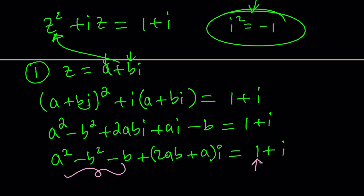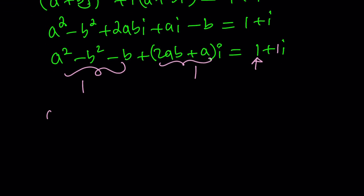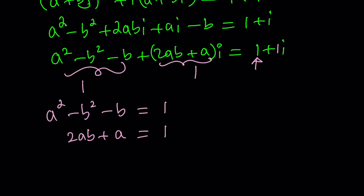We can set the real parts equal and the imaginary parts equal. So a squared minus b squared minus b equals 1, and 2ab plus a equals 1 — because that's considered 1 times i. That gives us a system of equations. You can set them equal to each other, but I'm not sure if that's going to help. Probably not.